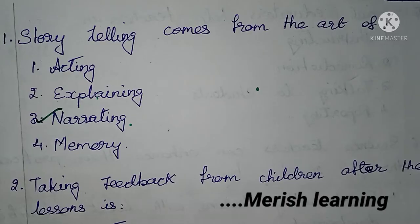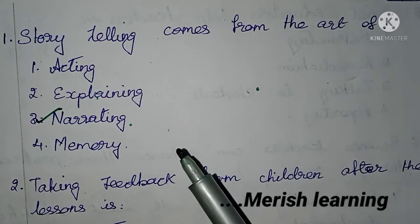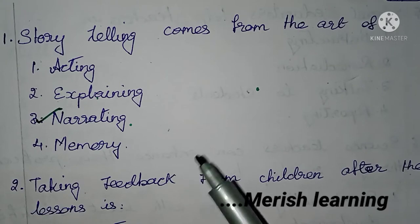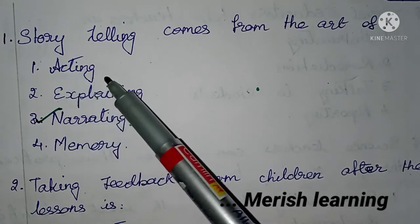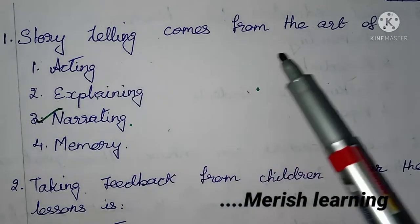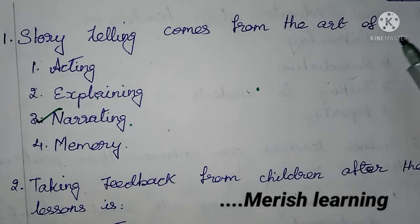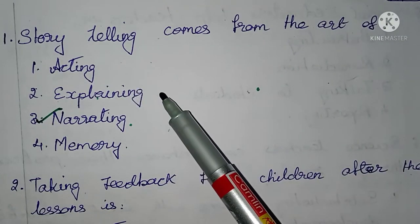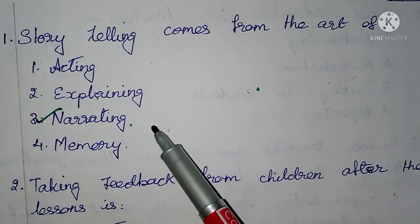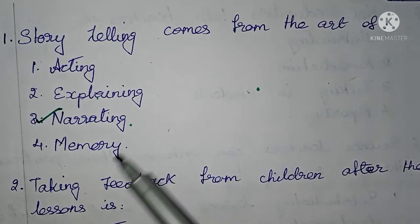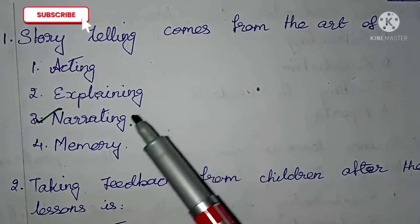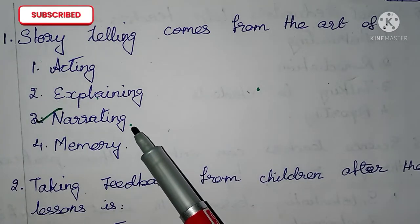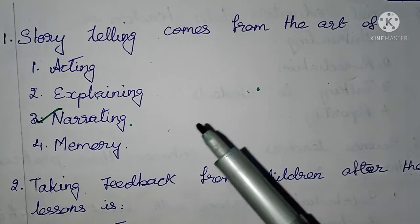Hello viewers. I am going to talk about the previous questions in psychology lab. First question: storytelling comes from the art of — 1. Acting, 2. Explaining, 3. Narrating, 4. Memory. Storytelling — option 3, Narrating, is the right answer.